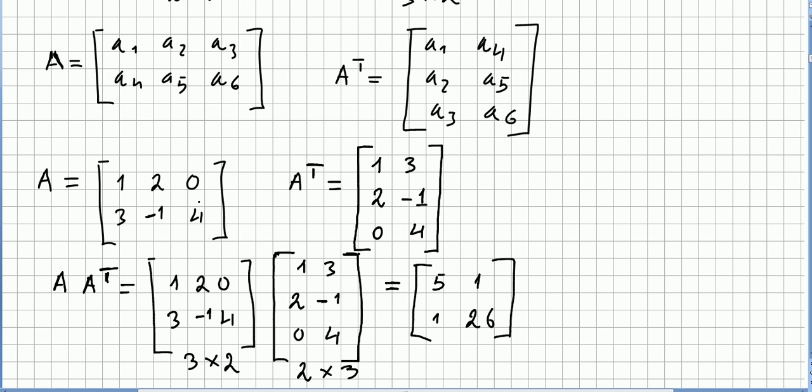Sorry, it's the other way around, right? Yes. So here, we have a 2 by 3 and here we have a 3 by 2, right? So we are getting, this is possible because 3 is the same as 3 and we are getting a 2 by 2.